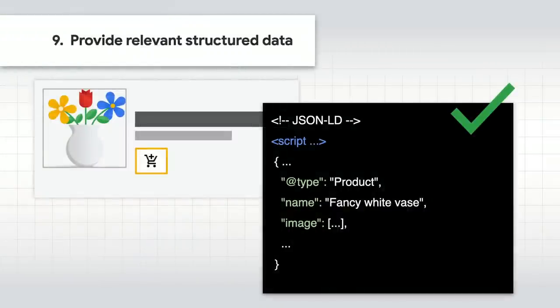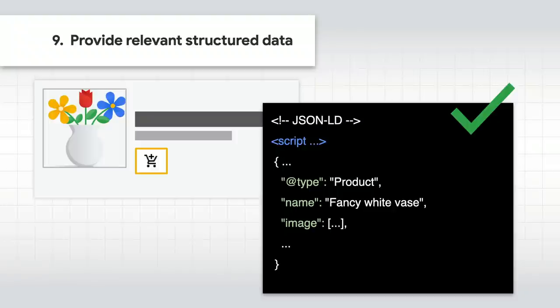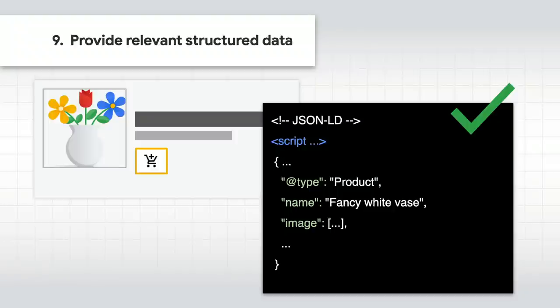That's a lot — following these general best practices will definitely help search engines to better understand your site's images. If you want to go further, we also have some advanced techniques to consider. Add appropriate structured data markup. Structured data is a way of providing machine-readable information about your pages and their content. Depending on the type of page, you might use different kinds of structured data — for example, a recipe page may use recipe structured data, a news article might use news article structured data, and an e-commerce site might use product structured data. We have information about all kinds of structured data in our developer documentation.